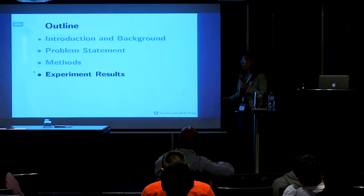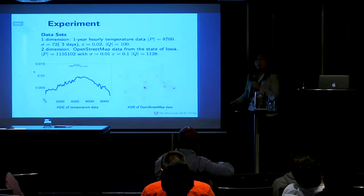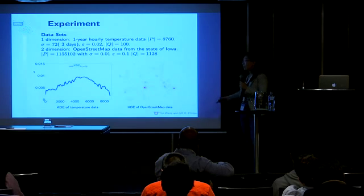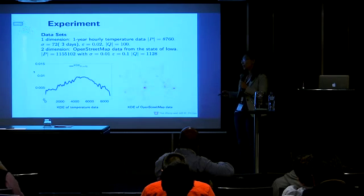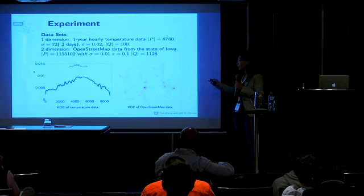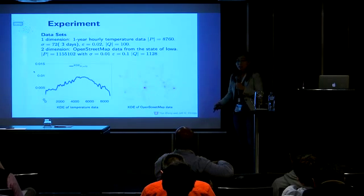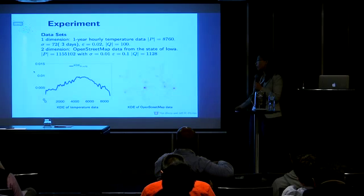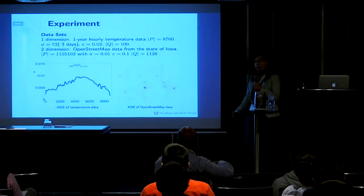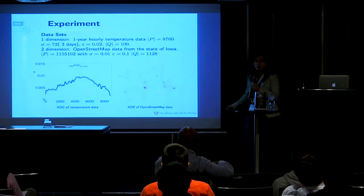Now I'll introduce some experiment results. Our paper presents both real and synthetic datasets — here we only discuss the real datasets. For the one-dimensional dataset, we use the temperature data with epsilon = 0.02, giving a coreset of around 100 points. For the two-dimensional dataset, it's the OpenStreetMap dataset of the state of Iowa, around one million points, and using epsilon = 0.1 we can reduce the coreset to around 1,000 points. We then apply the bandwidth selection method to these datasets.